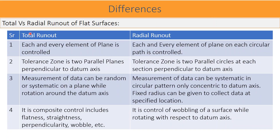Let us find a few differences between total run out and radial run out for flat surfaces created perpendicular to the datum axis. First, in total run out, each and every element of the plane is controlled, whereas in radial run out, each and every element of the plane on each circular path is controlled. Second, the total run out tolerance zone is two parallel planes perpendicular to the datum axis, whereas in radial run out, the tolerance zone is two parallel circles at each section perpendicular to the datum axis, separated by a distance equal to the given zone.